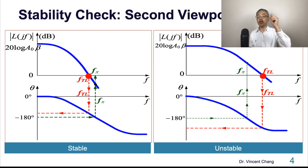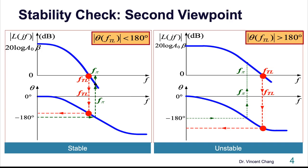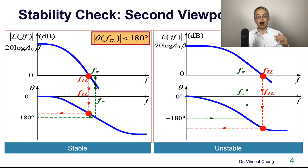The second viewpoint focuses on another frequency called unit gain frequency, FTL. At FTL, its corresponding phase, the absolute value of the phase, is less than 180 degrees - it's stable. But if it exceeds 180 degrees, then it becomes unstable. Both viewpoints are equivalent to each other.